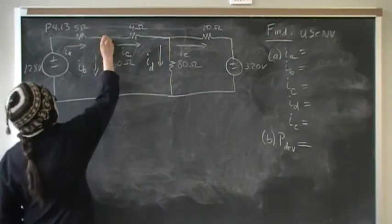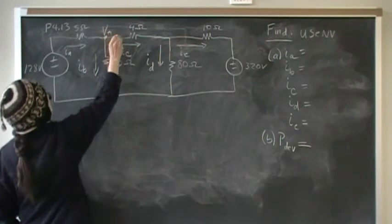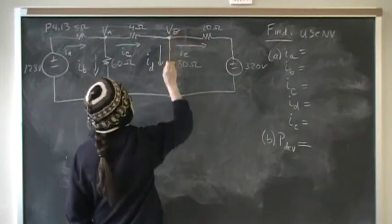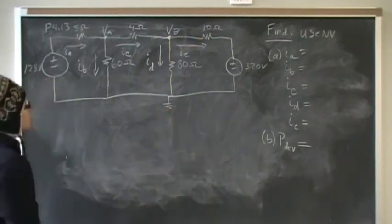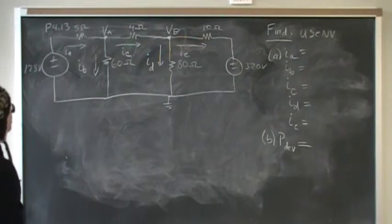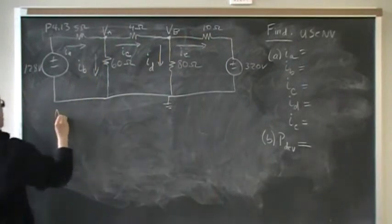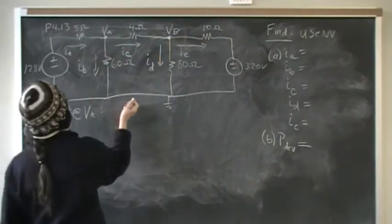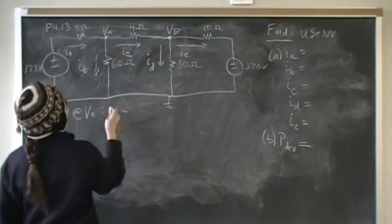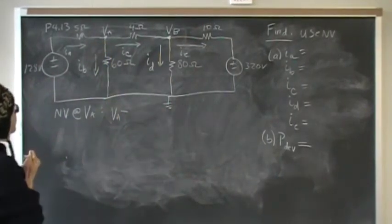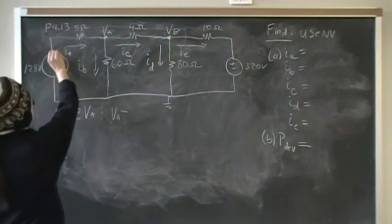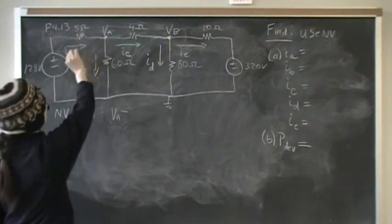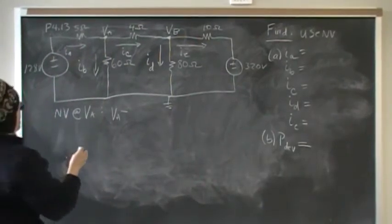Let's take this node here to be one of our nodes, and we'll do KCL on that node, and this would be our second node, and we'll take the bottom node to be the ground. Doing KCL there, we'll do node voltage at VA gives us VA minus, even though we have the current going into the node, we define the positive current to be leaving the node. So the sum of all the positive currents should be zero.